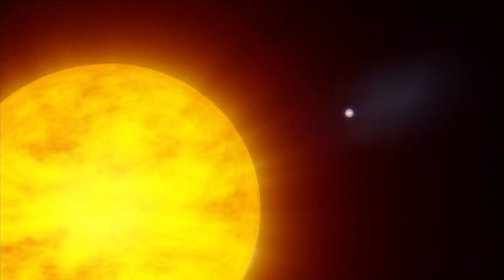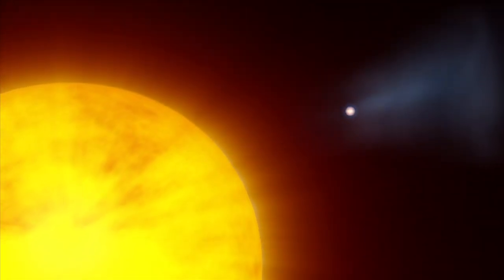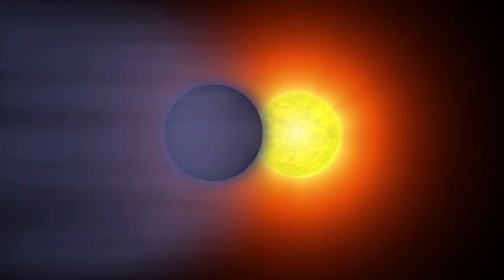While HD 189733b has plenty of gas to spare, atmospheric erosion is an important process, one able to whittle down any gas giant planet that hugs its star too close.